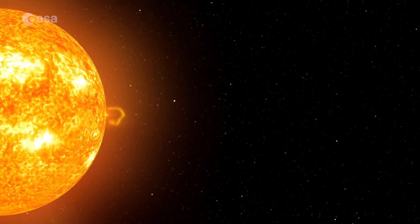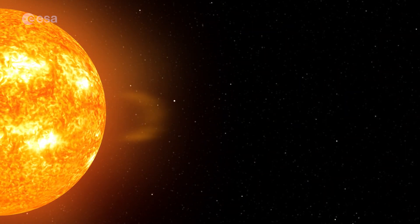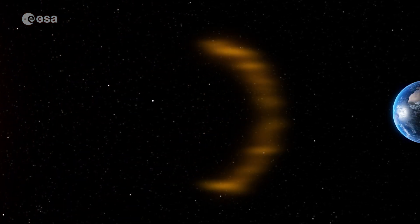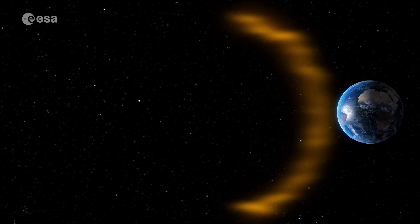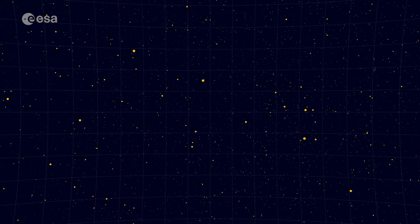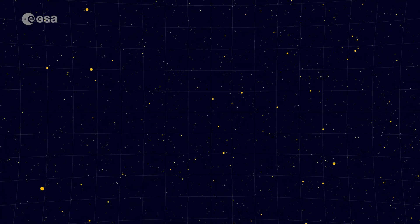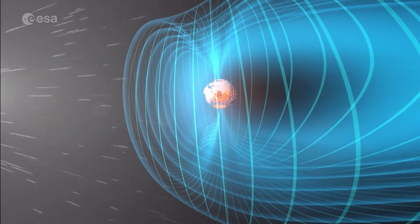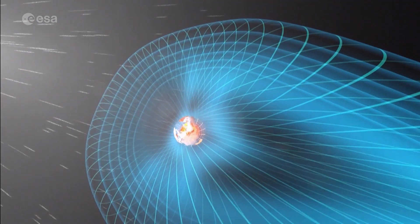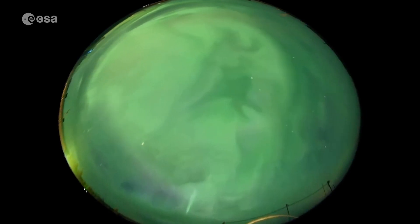Coronal mass ejections are giant explosions that shoot billions of tons of plasma from the Sun in magnetic clouds that dash through space at up to 3,000 kilometers per second. Processes associated with solar flares and coronal mass ejections can also accelerate particles in the solar wind to near light speeds. Sometimes, this high-energy matter, radiation and plasma is directed at Earth and arrives with an almighty bang.